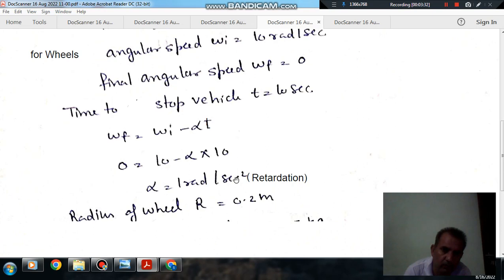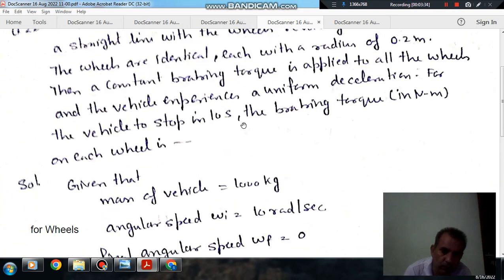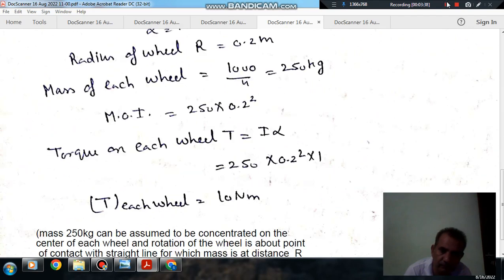So, the answer is 10 Nm. The braking torque on each wheel is 10 Nm. Thank you.